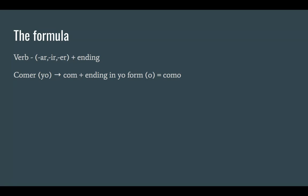The formula for conjugating verbs in the present tense is: take the verb, minus its AR, ER, or IR ending, and then add the ending in whatever form you're trying to conjugate it in. That may be a bit confusing, so here's an example.